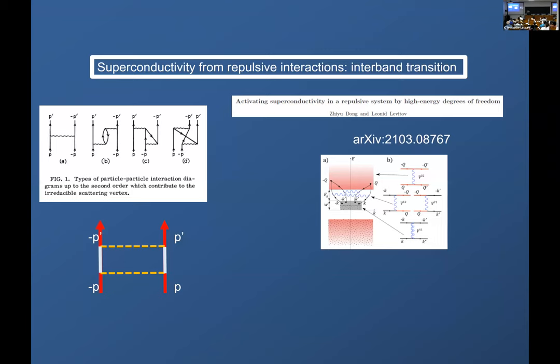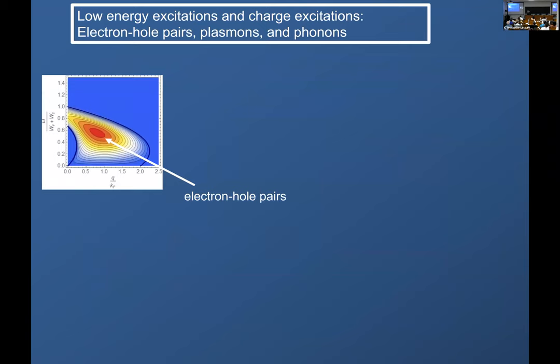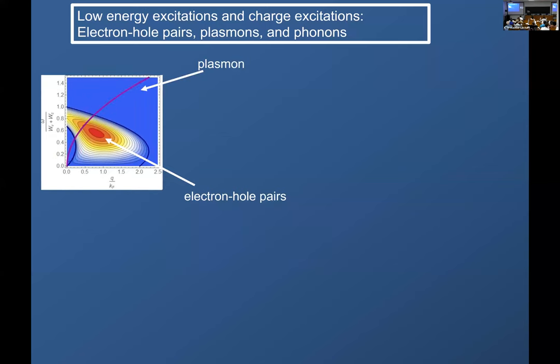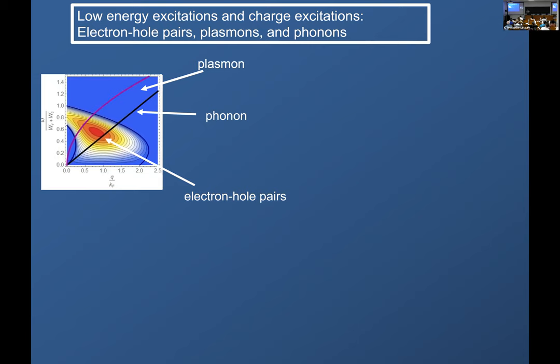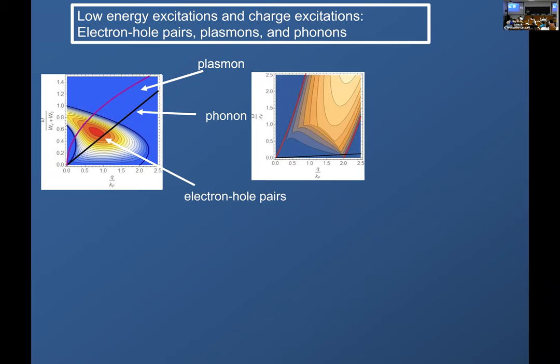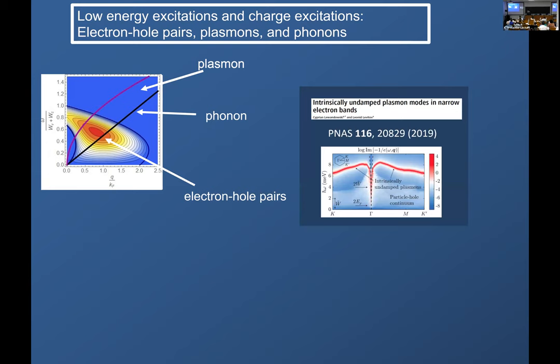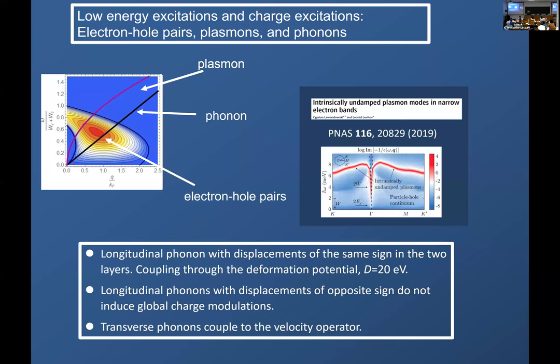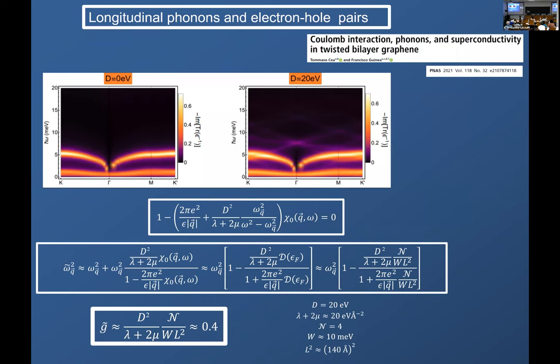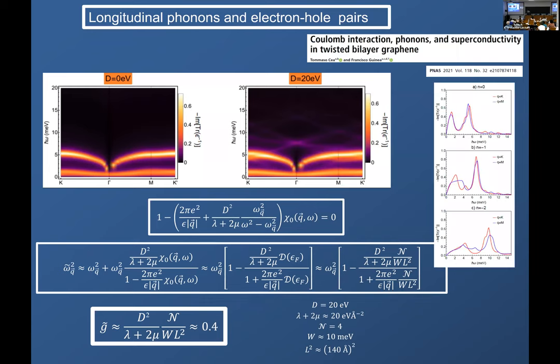But the point I want to make is that this is the kind of excitations you expect in twisted bilayer graphene. You have plasmons, you have electron-hole pairs, and you have phonons, and they are all overlapping, one on top of each other. This is not what you have in a typical 2D electron gas. There, the phonons are very much decoupled from the electron-hole pairs because they basically occupy a different energy range. You can see it in this nice calculation of the dielectric function by Cyprian Lewandowski and Leonid Levitov. You have the continuum and the plasmons close together.